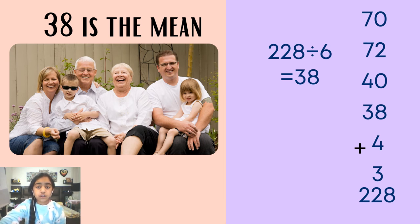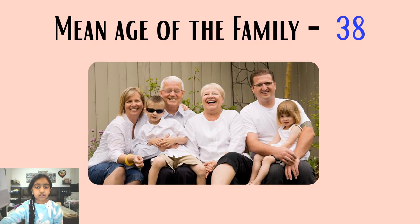Now we need to divide 228 by 6 as there are 6 family members. So 228 ÷ 6 = 38. The mean is 38, or the average age in their family is 38.